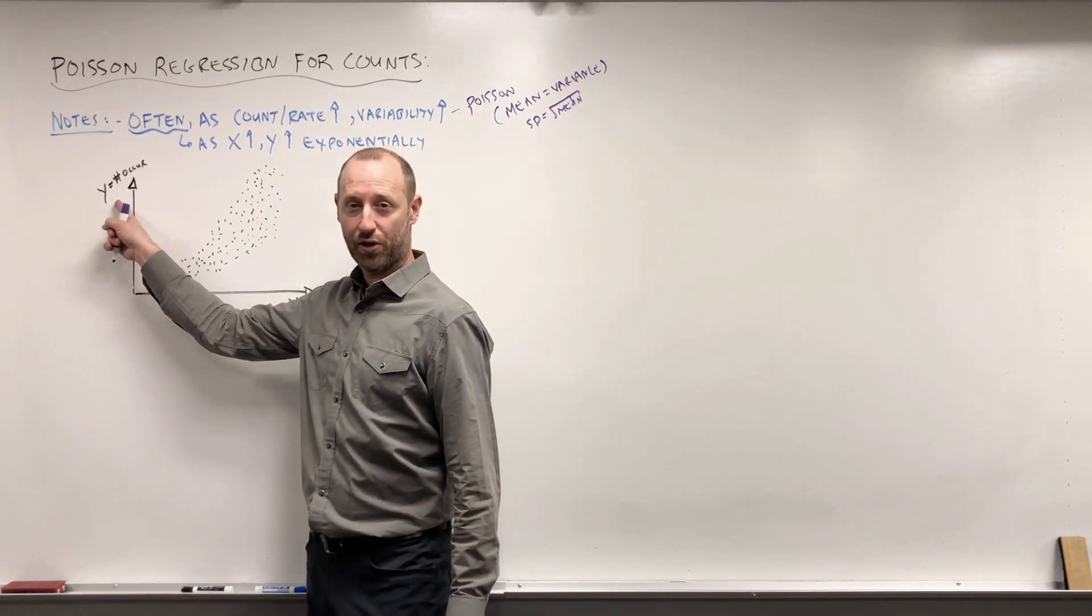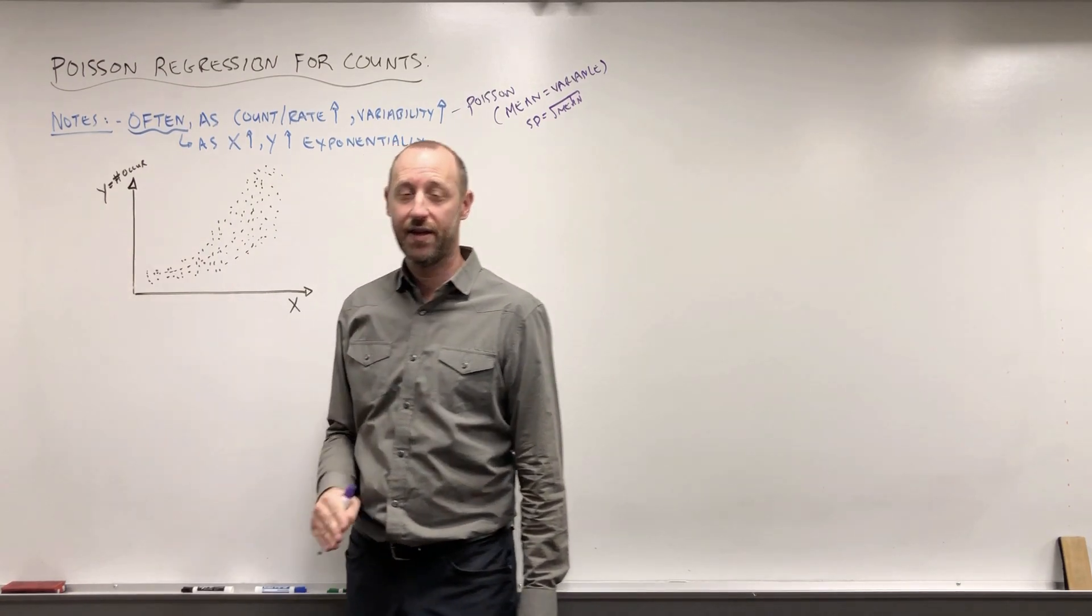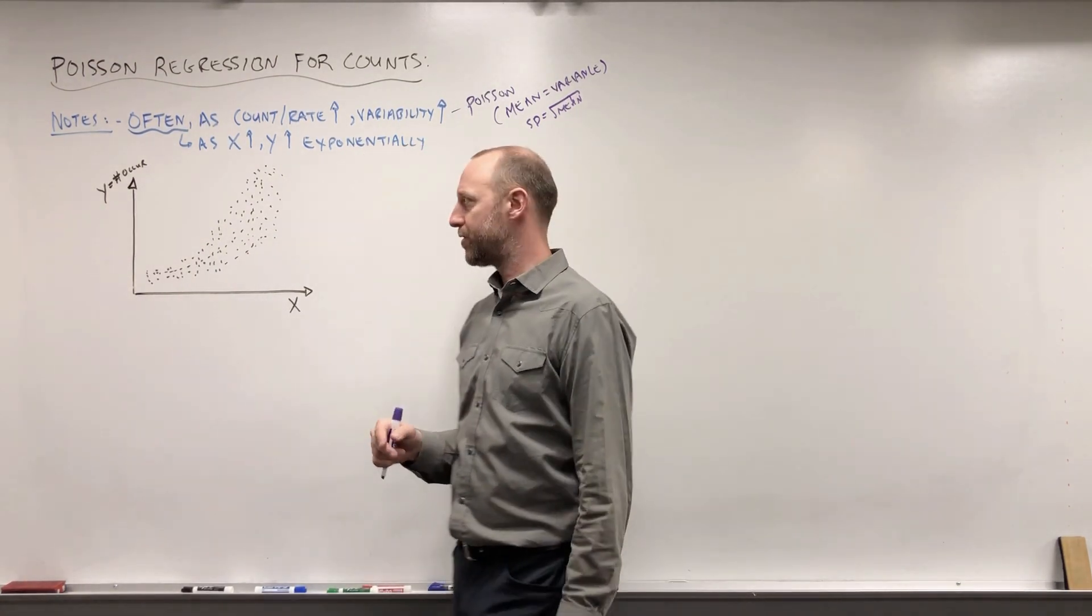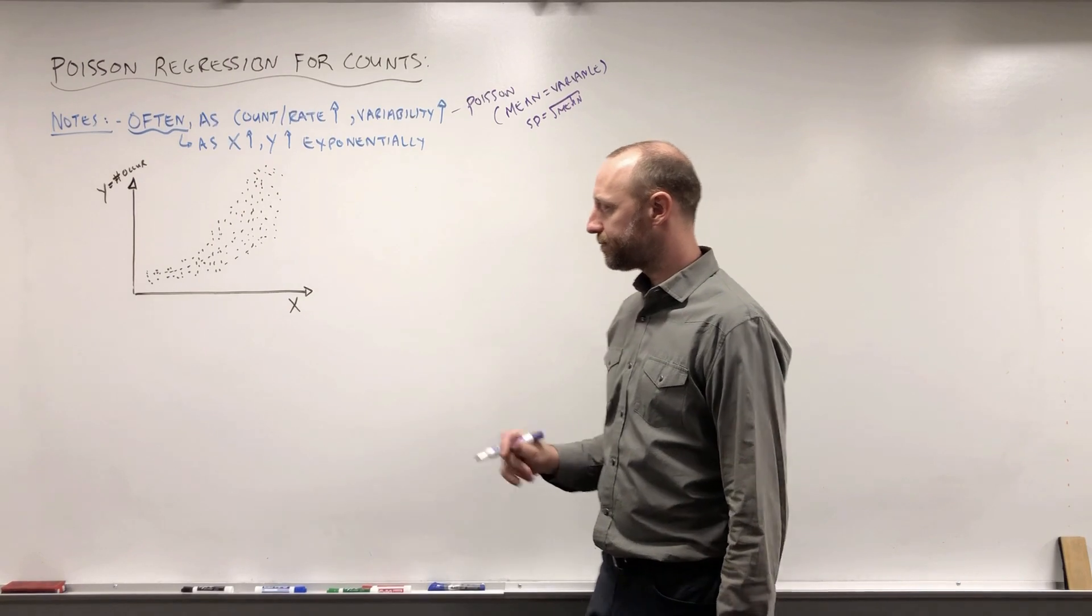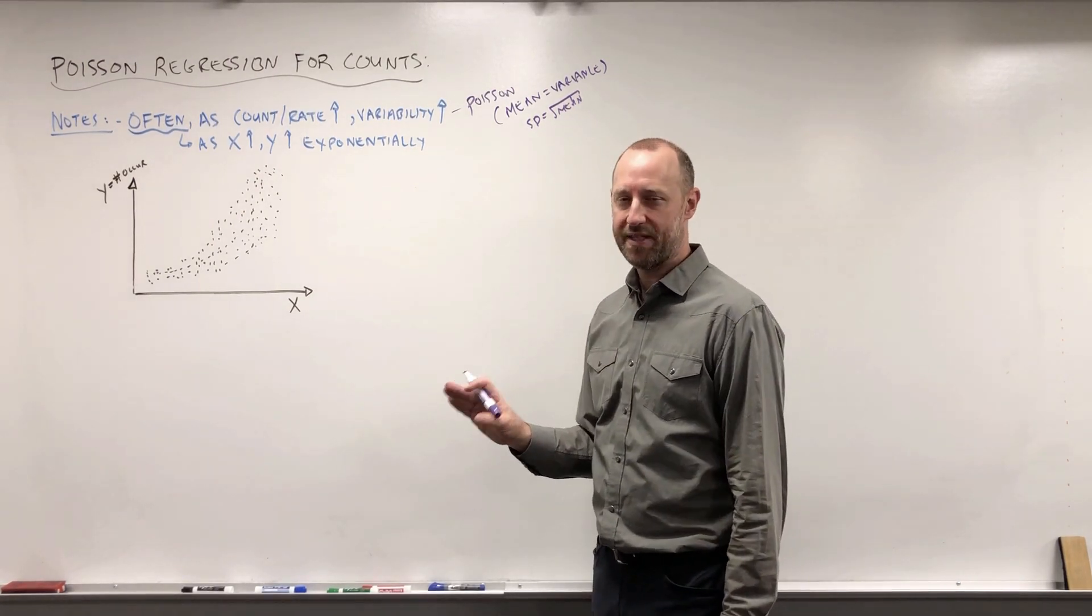So this is a feature that often happens in count data. As we expect an event to occur more often, the variability from that gets larger. Let's take a moment just to explain conceptually why that seems to make sense.